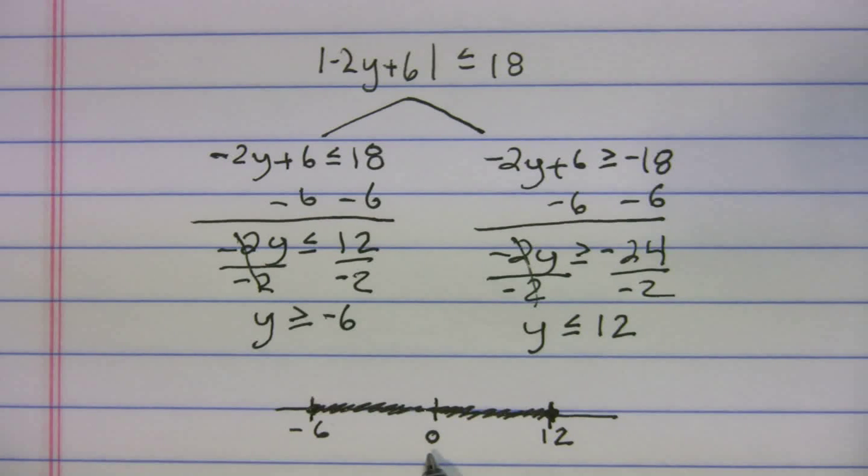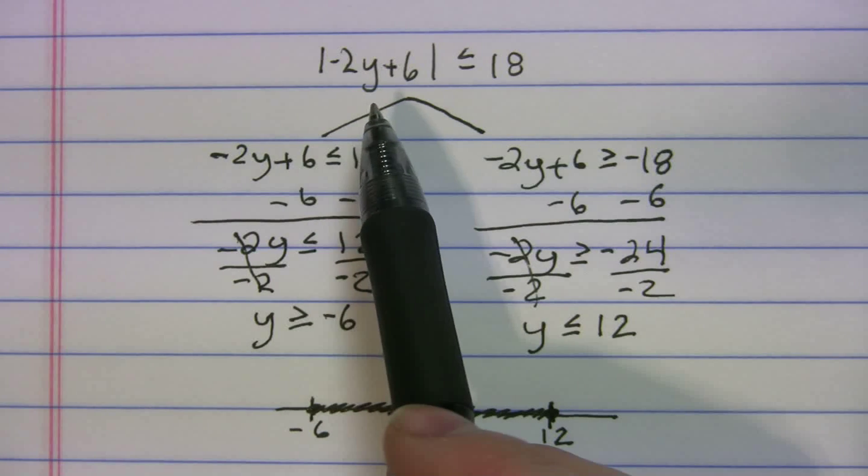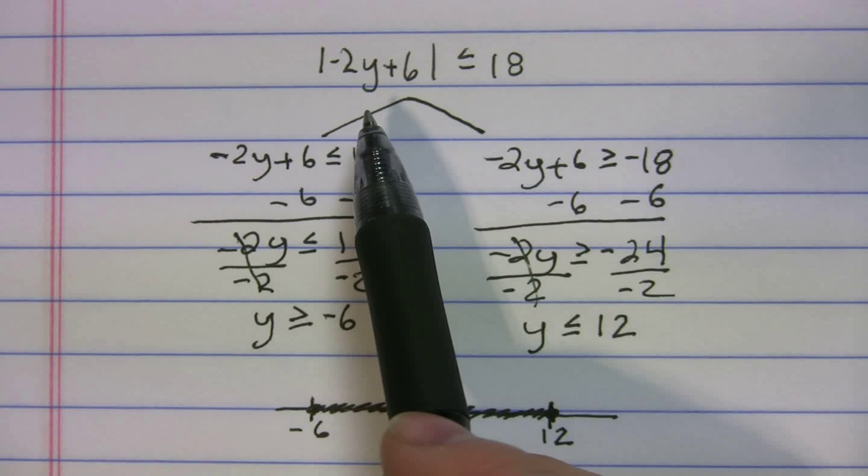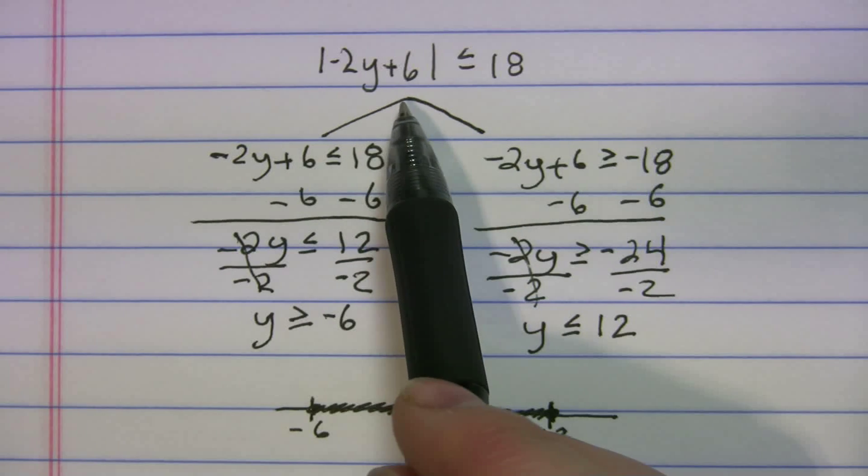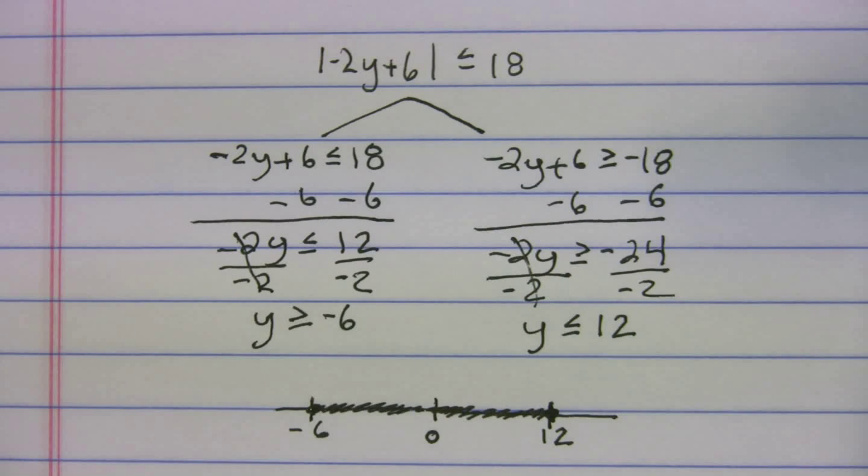And we can test that too. Let's say we plug in 0 for y. Well, what does that mean? If that's going to be -2 times 0, which is just 0, and what's left over? Just the 6, right? So is the absolute value of 6 less than 18? Yeah, sure. 6 is less than 18. So that's why that works.